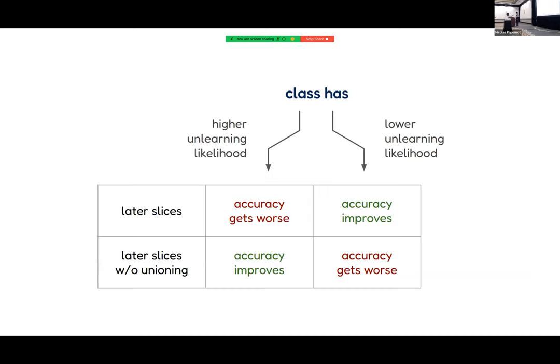So no matter whether your class has a positive or negative correlation with unlearning likelihood, you can always select some training regime in which that class benefits. But you should also pay attention and measure which correlation exists, because you don't want to end up in the problematic settings.